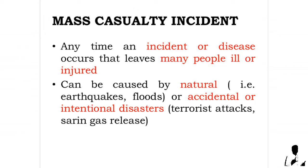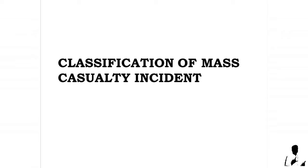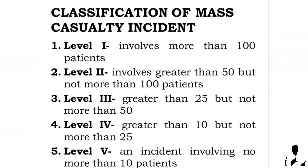Any time an incident or disease occurs that leaves many people ill or injured, it can be a mass casualty incident. These can be caused by natural events such as earthquakes and floods, or accidental and intentional disasters such as terrorist attacks or a sarin gas release.